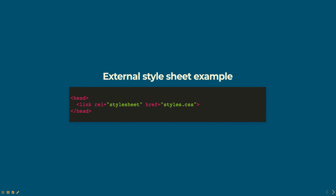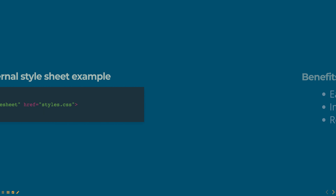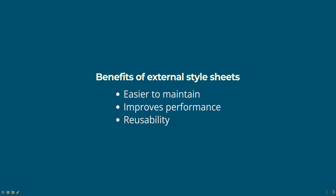Linking external style sheets has several benefits. First, it is easier to maintain — styles are defined in a separate file, so it's easy to make global changes to the styles of a website without having to edit multiple HTML documents. Second, it improves performance, as the browser can cache the external CSS file, reducing the number of HTTP requests and improving the loading time of the webpage.